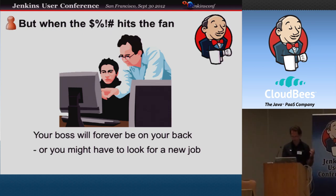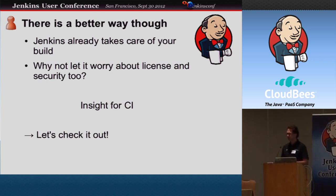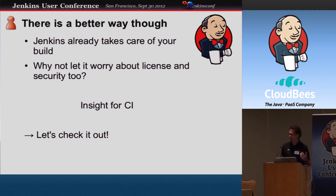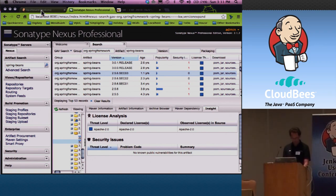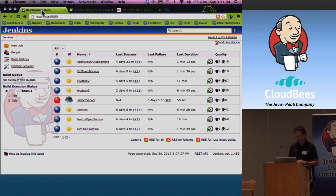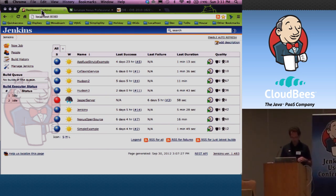We don't want you to end up in that situation. Luckily, you guys are all Jenkins users already — or I hope you are, and if not, I'd urge you to download it now. Jenkins already takes care of your build — why not let it worry about the licenses and the security for you as well? That's what we are hoping to offer you. There's an Insight 4CI plug-in that can analyze your builds — or like the output of your builds — and give you some information. I've got a local Jenkins running here and I have the Insight 4CI plug-in installed.